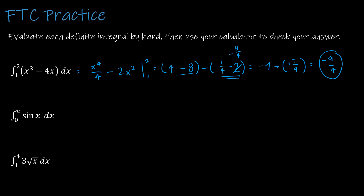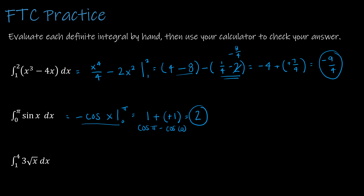For the sine problem: when you integrate sine, you ask what gives sine as its derivative. The answer is negative cosine of x, because the derivative of cosine gives negative sine. So the antiderivative is negative cosine of x, evaluated from 0 to pi. Plugging in pi: cosine of pi is negative 1, making it negative times negative 1 equals 1. Plugging in 0: cosine of 0 is 1, making it negative 1. So it's 1 minus negative 1, which equals 2.